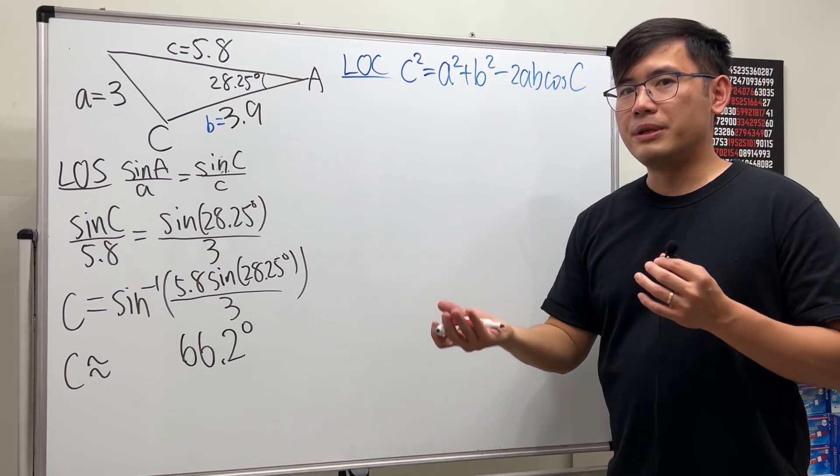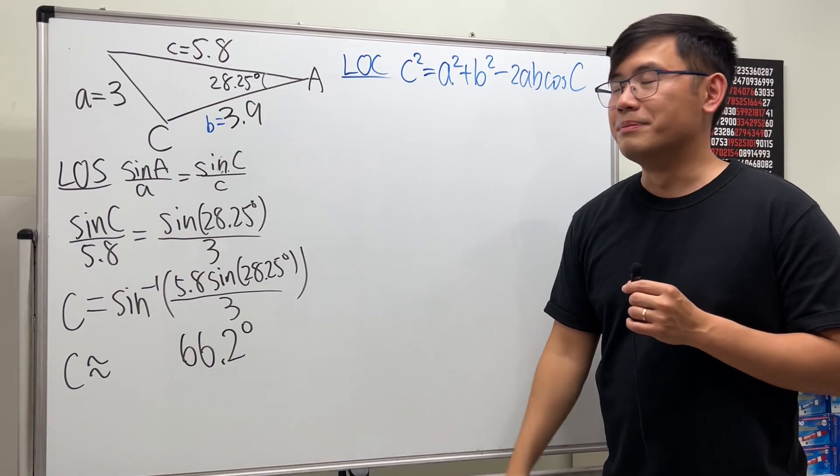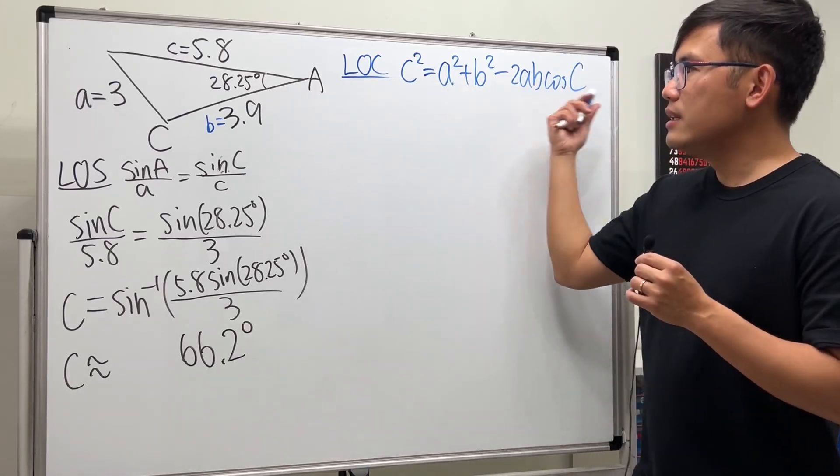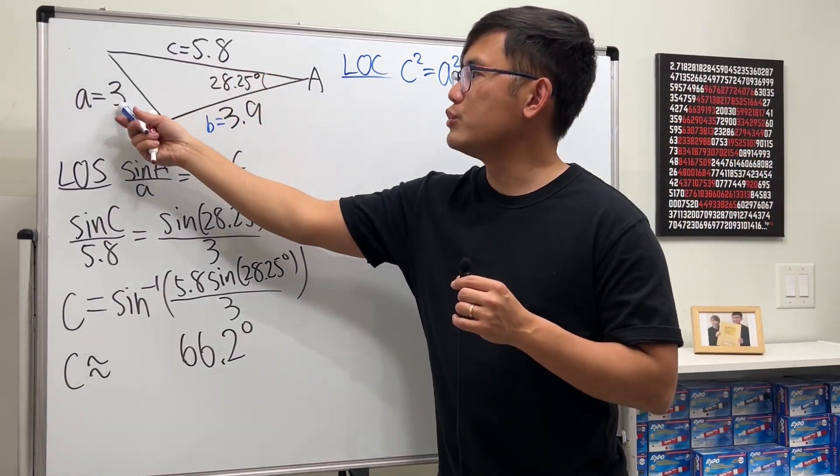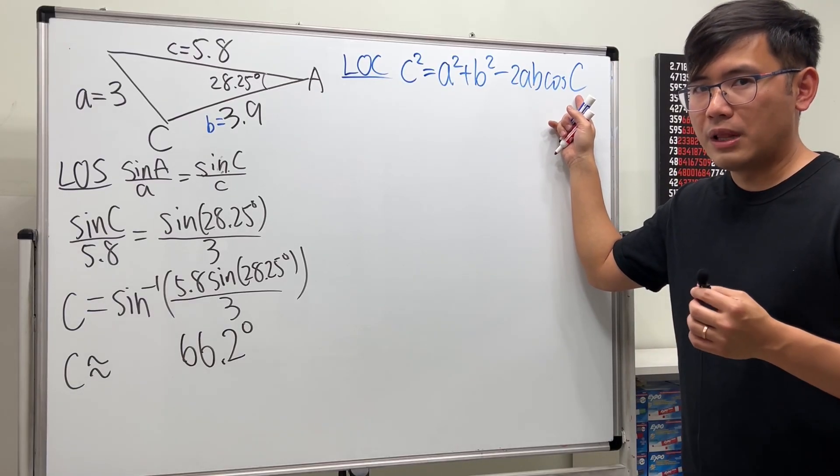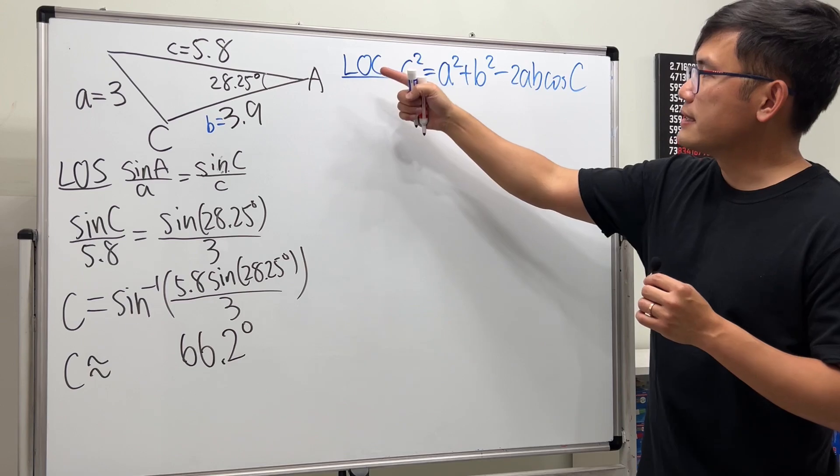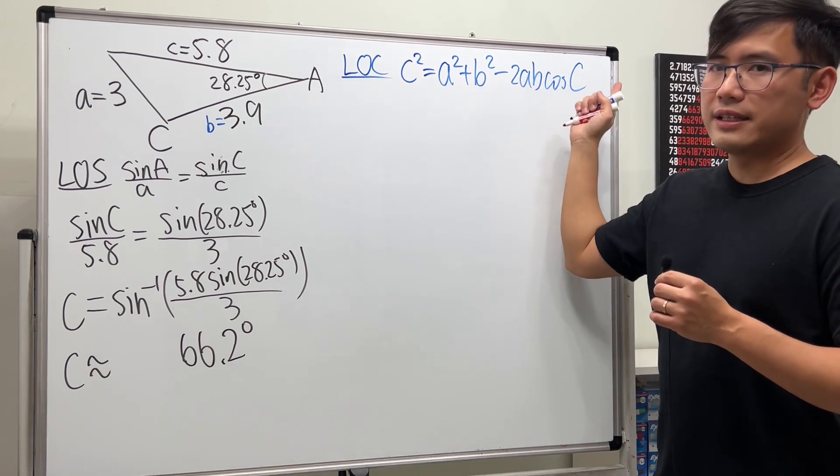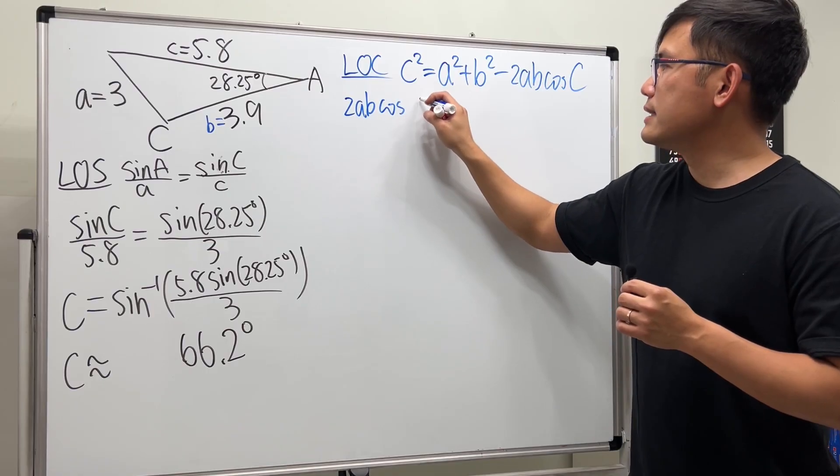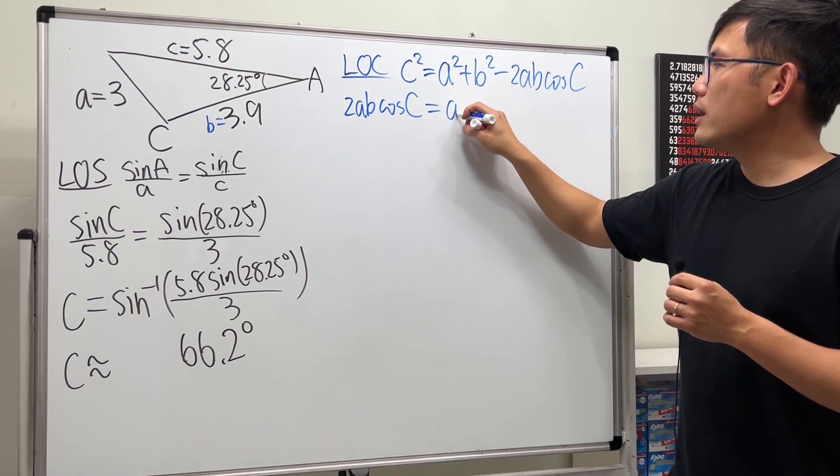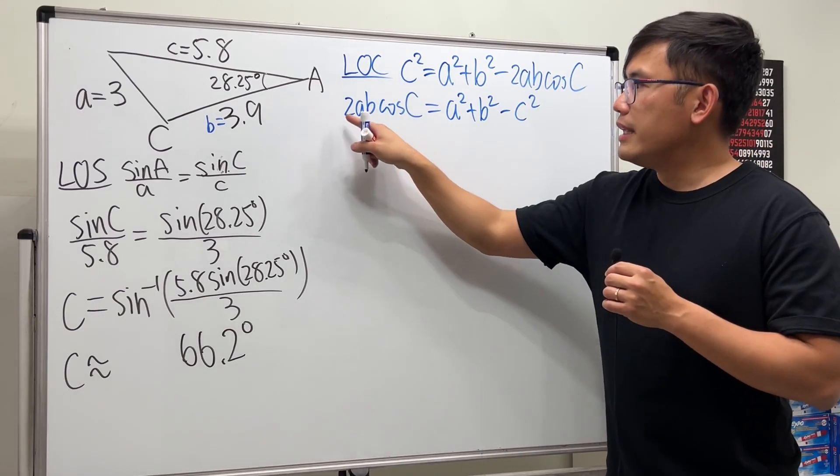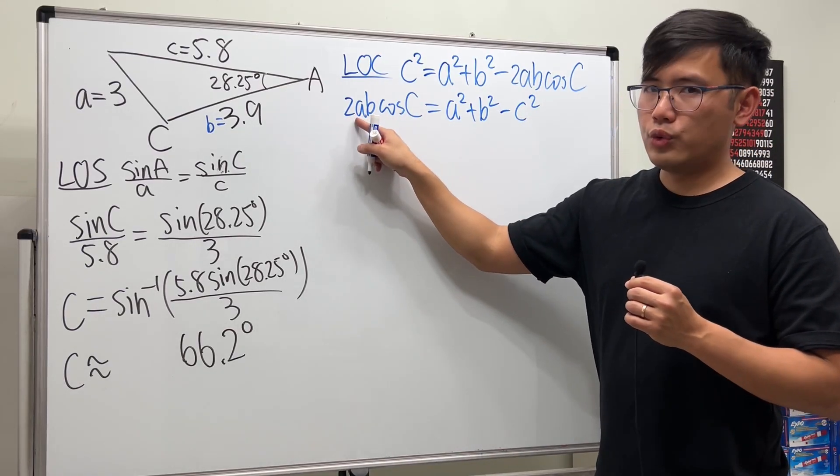I will say this is like the more complete version of the Pythagorean theorem because it works for all triangles. And you use this whenever you are given all three sides. Now, let's go ahead and solve for angle c first before we plug in the numbers. I'm going to move this to the other side, and then move the c squared to the other side. And we get 2ab cosine c equals a squared plus b squared and then minus c squared.